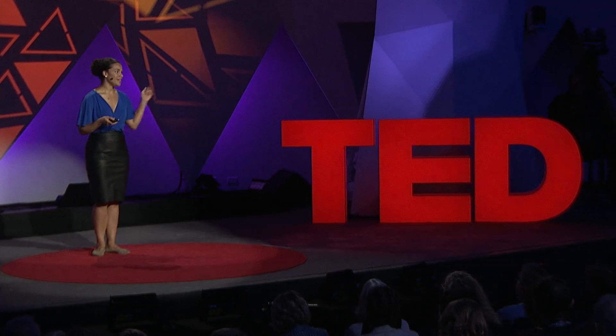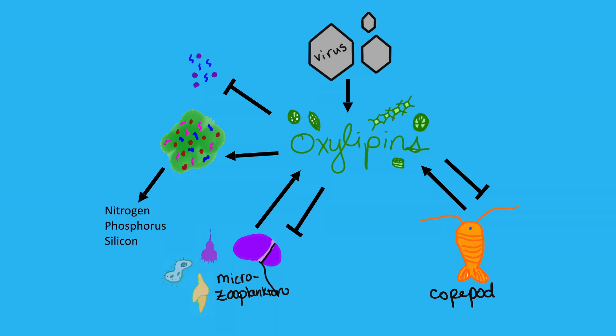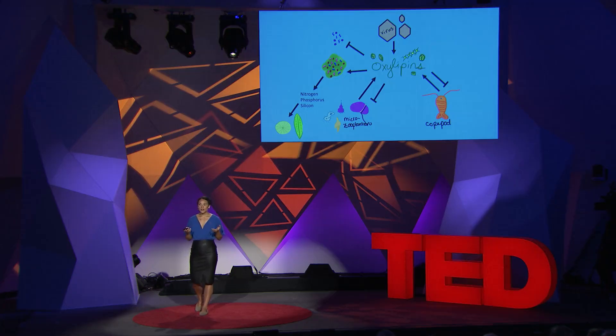So if you're a diatom, what is the advantage of whispering oxylipin to a bacterium as you're dying? This increased respiration and degradation of dead organic matter leads to recycling of nutrients — nitrogen, phosphorus, silicon — that can go on to fuel future phytoplankton blooms and potentially one of your kin, helping to pass on your DNA. We have this chemical language orchestrating an intricate dance between all these different cell types in the ocean: phytoplankton making the messages, single-celled and multi-celled grazers responding, single-celled bacteria, and even viruses.